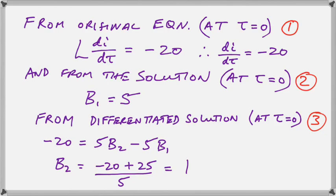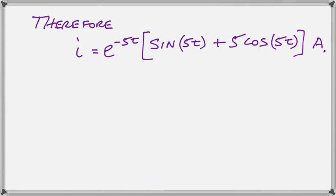So we have 5B2 minus 5B1, and then when we just solve that, we find that B2 is equal to one. So now we have B1 and B2, we just put them in, and our final solution is shown. Thanks for watching, and see you in the next video.